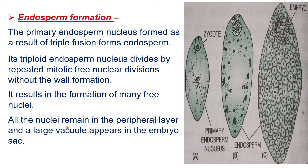All the nuclei remain in the peripheral layer, and a large vacuole appears in the embryo sac. After some time, a large vacuole forms in the central part of the embryo sac, and all the nuclei arrange themselves in the peripheral region. Now the zygote will develop further by taking nutrition from the endosperm.